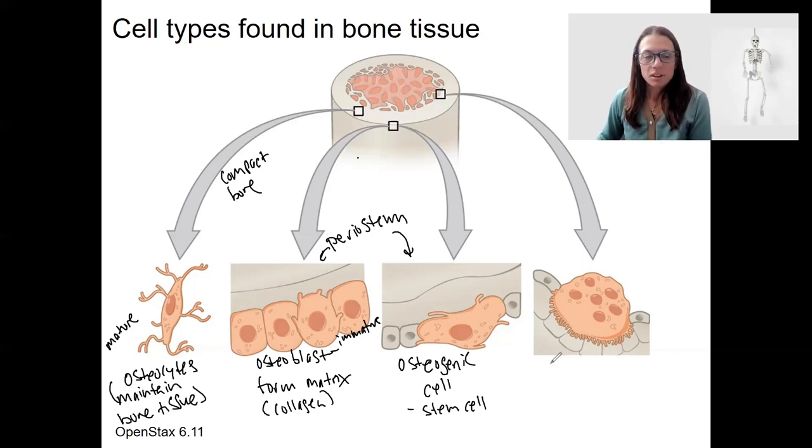The last type is osteoclasts. Clast is like calamity is what I think of it as. These break down or resorb is the word bone. Break it down. These are located in that endosteum.